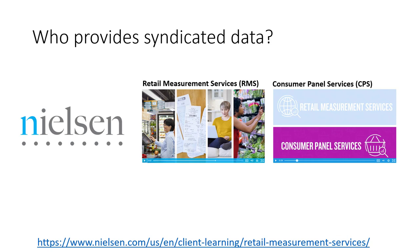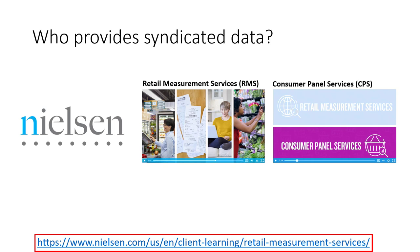Let me provide two examples of very large syndicated data services. Perhaps the most notable is from Nielsen, the world's largest marketing research firm. Two of their biggest syndicated data sources are their Retail Measurement Service (RMS) and their Consumer Panel Service (CPS). The RMS provides information about consumer packaged goods sales at the retail store level, while the CPS provides similar information about consumer purchases but relies on survey response data coming directly from consumers. These are often complementary services providing similar but distinct insights. Nielsen itself provides an excellent quick overview — follow the link below and review their brief videos.